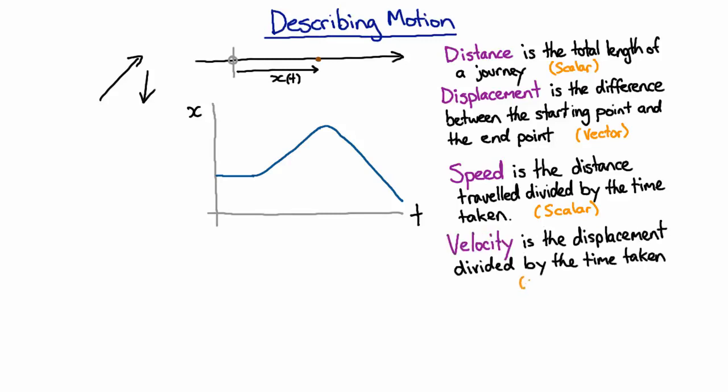Velocity is a vector because it's got a direction. If you travel backwards then you have a negative velocity. So the velocity here would be zero, the velocity here would be positive because x is getting bigger over time, and the velocity here would be negative because x is getting smaller over time.